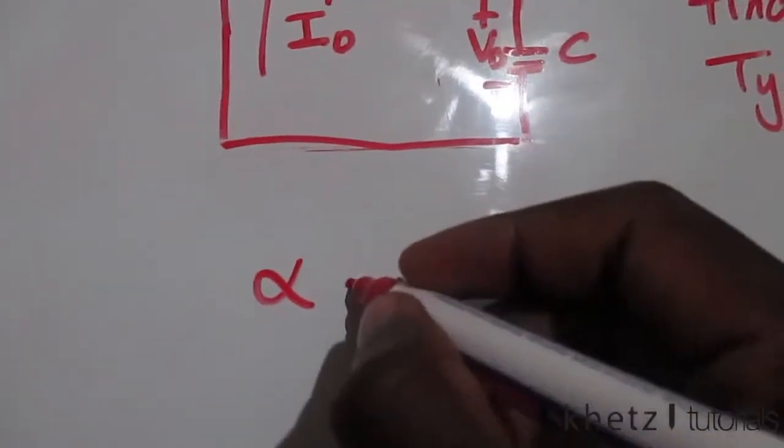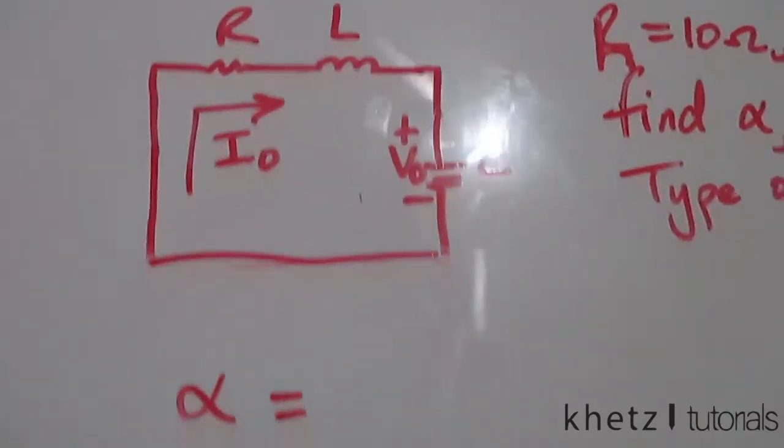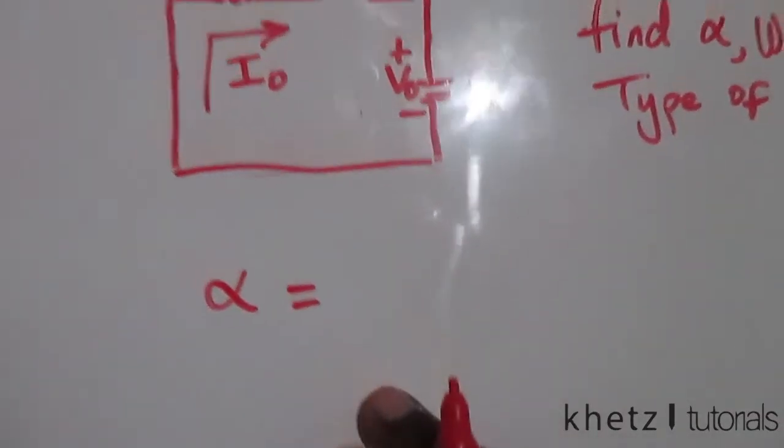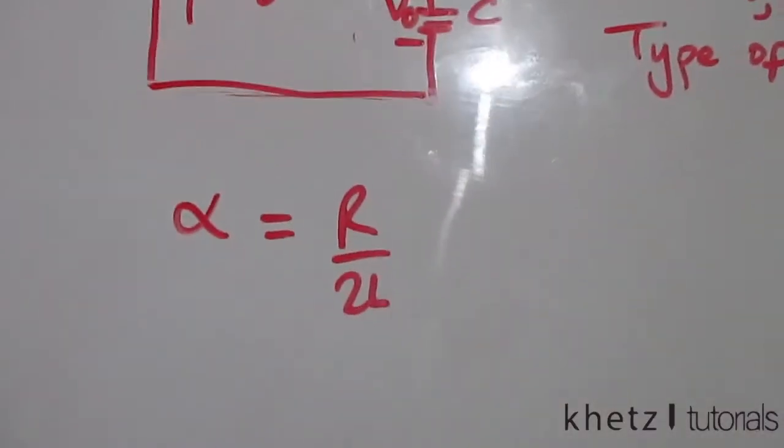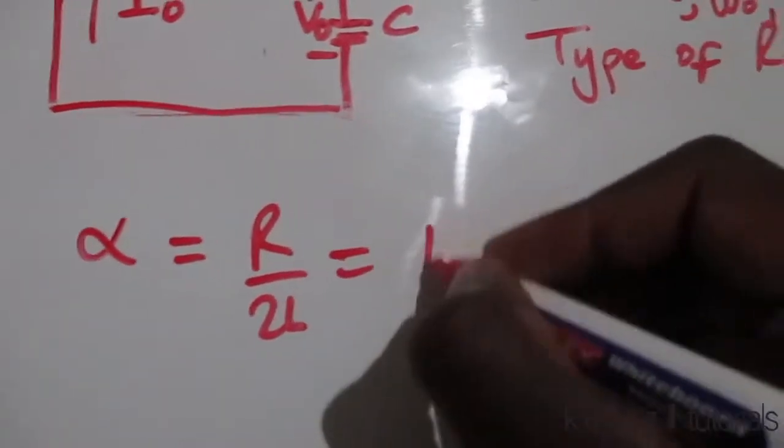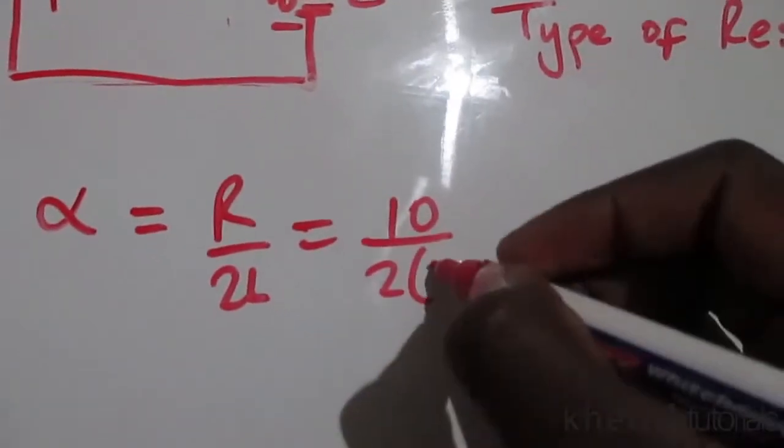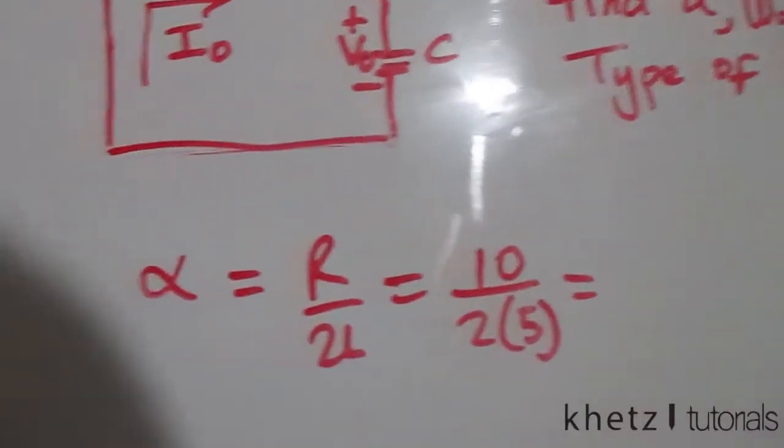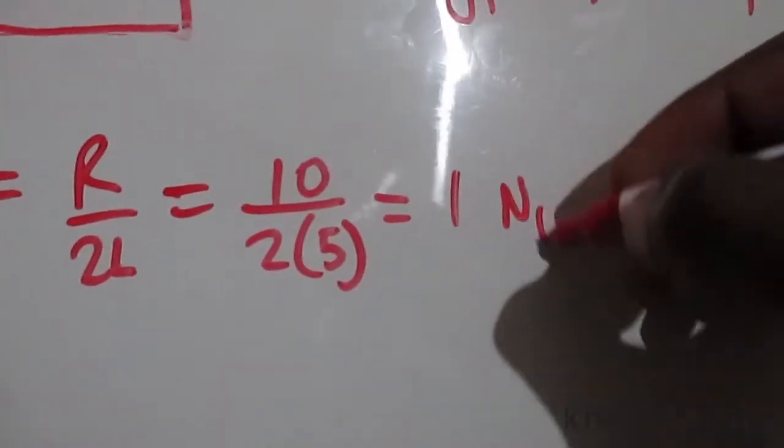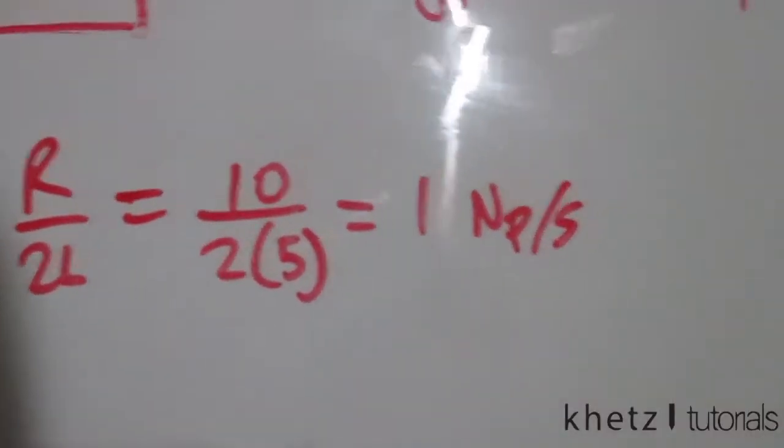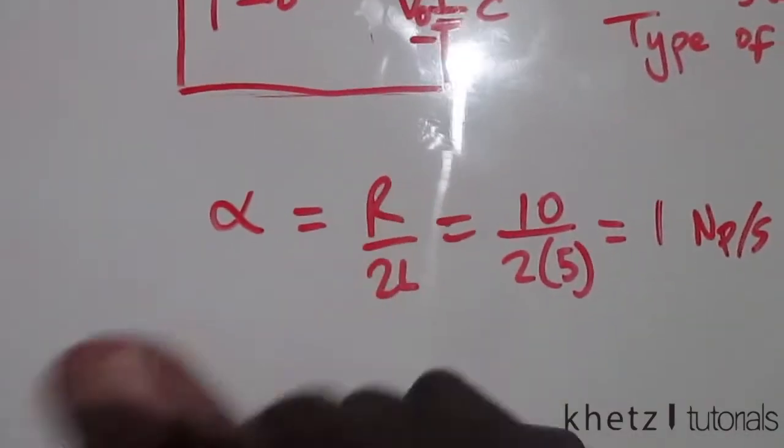For a series RLC circuit, alpha equals R divided by 2L. Substituting the values, we have 10 divided by 2 times 5. Therefore, the damping factor is 1 neper per second.